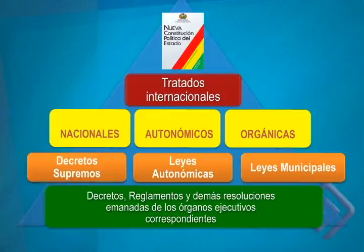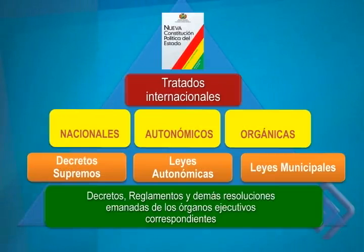Dentro de la jerarquía normativa, la Constitución Política del Estado está en la cima. Luego vienen los tratados internacionales y después tenemos a la Carta Orgánica Municipal, al mismo nivel que las leyes nacionales y los estatutos autonómicos. Esto quiere decir que la Carta Orgánica solamente responde a los lineamientos de la Constitución Política del Estado, porque en muchos casos la misma Carta Orgánica, en el ámbito del municipio, tiene primacía sobre las leyes autonómicas que se pueden elaborar.